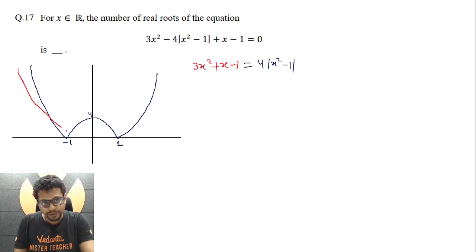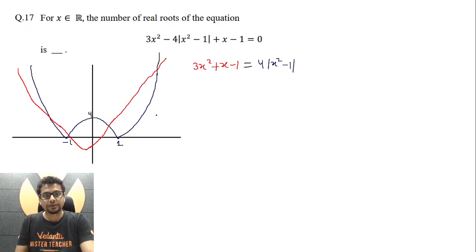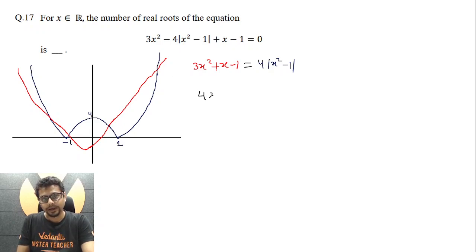So the graph will turn out to be something like this. At x = -1, it is positive. At x = -1/6, it has its vertex. At x = 0, it is -1. At x = 1, it is essentially 3 — the point is, it is positive. And it will go something like this. So clearly, there are four intersection points: 1, 2, 3, 4. So the number of real roots would be 4.